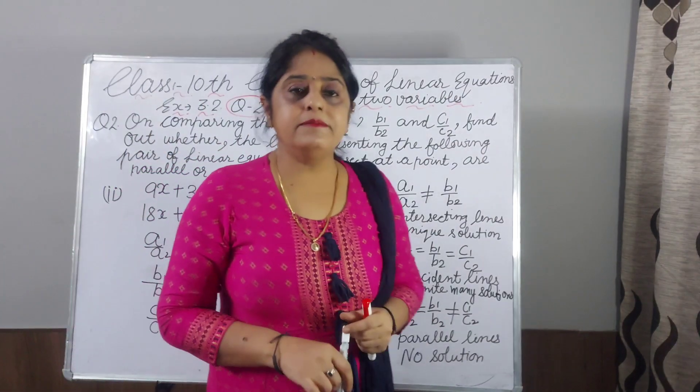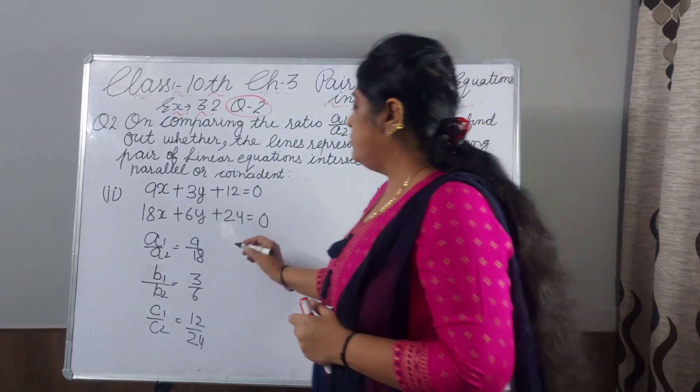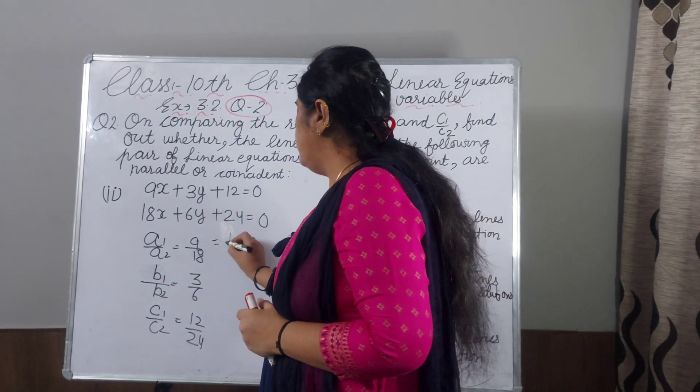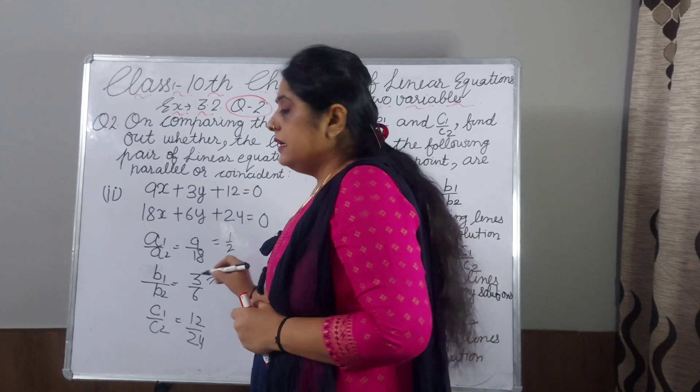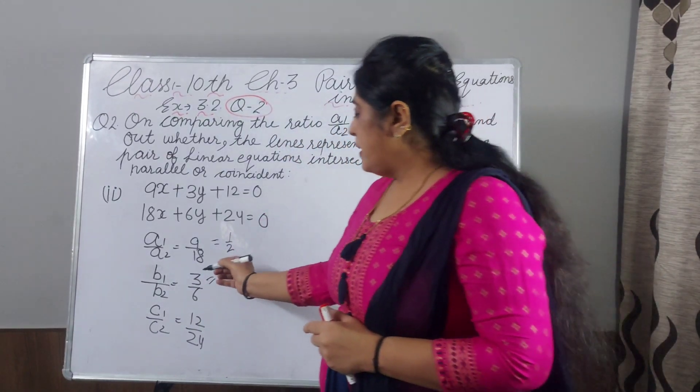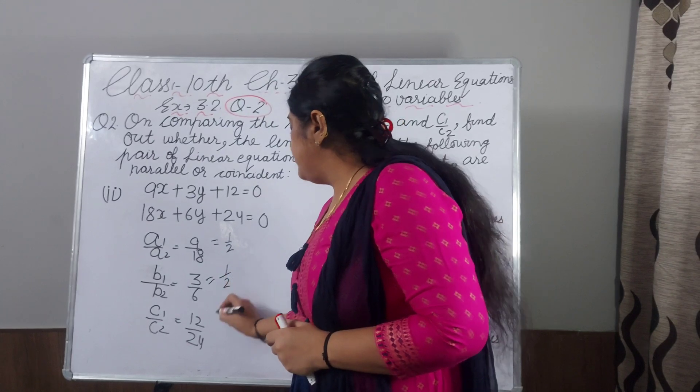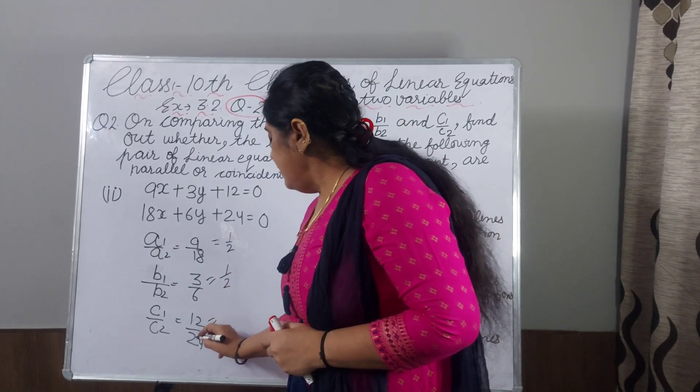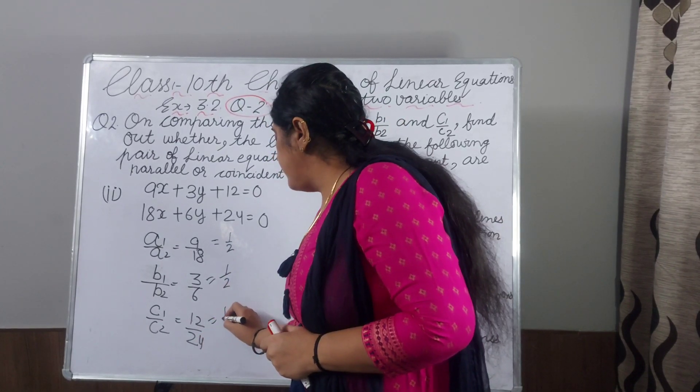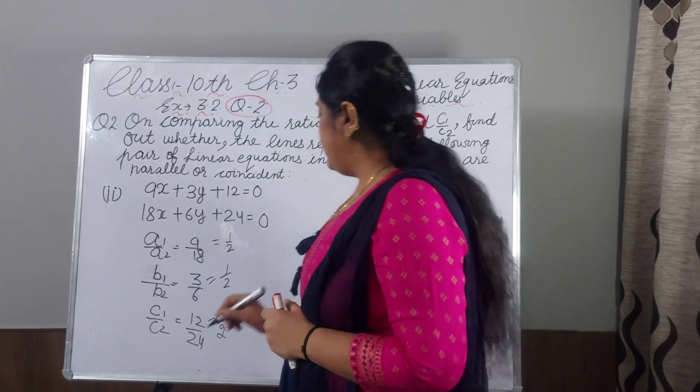9 and 18 comes in the table of 18. We can reduce the term, which is equal to 1 by 2. 3 and 6, you can reduce the term, you will get 1 by 2. 12, 2s are 24, you can reduce the term: 1 by 2.